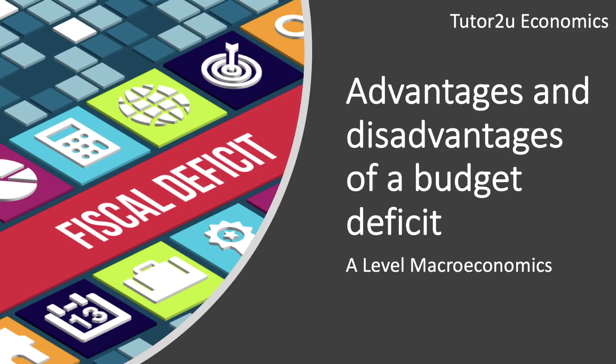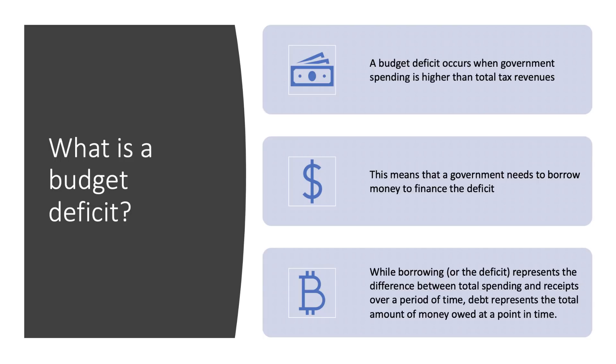In this short macroeconomics video we're going to look at some of the main arguments for and against a government increasing the size of their budget or fiscal deficit. A fiscal deficit or budget deficit happens when total government spending is higher in any given financial year than the money coming in from tax revenues.